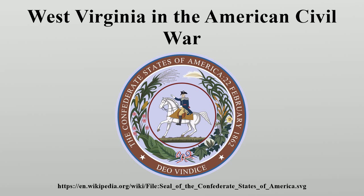Union troops also held the three northernmost counties in the Shenandoah Valley, and despite the pro-secession views of most residents, these counties were also subjected to the restored government. At the Wheeling Convention, some delegates proposed the immediate establishment of a separate state. However, other delegates pointed out that the creation of a new state would require the consent of Virginia under Article 4 of the Constitution. Thus it was necessary to establish the restored government of Virginia to give that consent, which was granted 20 August 1861.